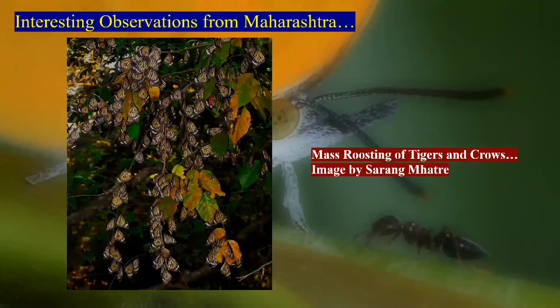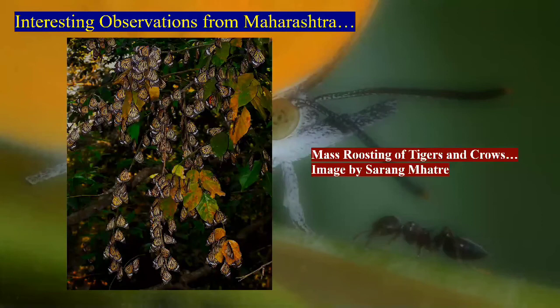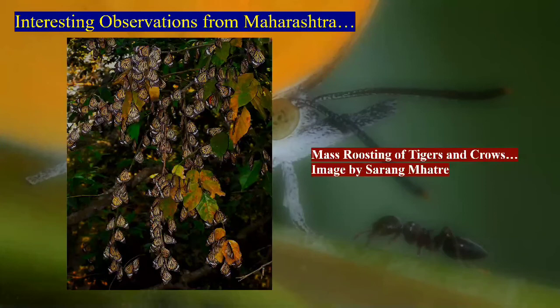Many of you must have experienced mass roosting — after migration or certain seasons, butterflies like crows, plain tigers gather together and sit on tree branches or rocks, sticking together. There are so many areas in the Kokan region where we experience this behavior. In Mumbai, visiting during January or February, this is a lifetime experience — fascinating even for those who know nothing about butterflies.